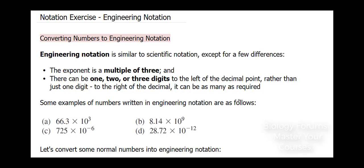The exponent is a multiple of three, and the exponent that I'm referring to is the exponent of the power of base 10. There can be only one, two, or three digits to the left of the decimal point rather than just one digit to the right of the decimal. It can be as many as required.